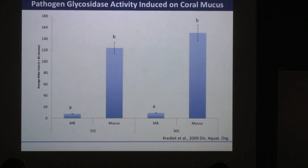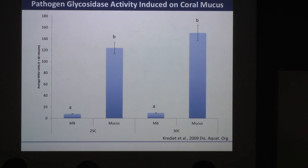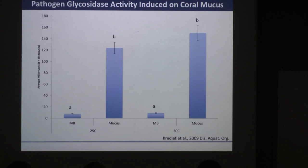These studies have all been published, but this was basically our first indication that they are using glycosides in the coral mucus, and we actually show that they use them at different temporal time frames than some of the bacteria normally associated with it. Our hypothesis is that this is a way they gain that ecological foothold — by utilizing some of these sugars when the other bacteria are not able to, getting in, utilizing them faster, and then progressing towards a diseased state.